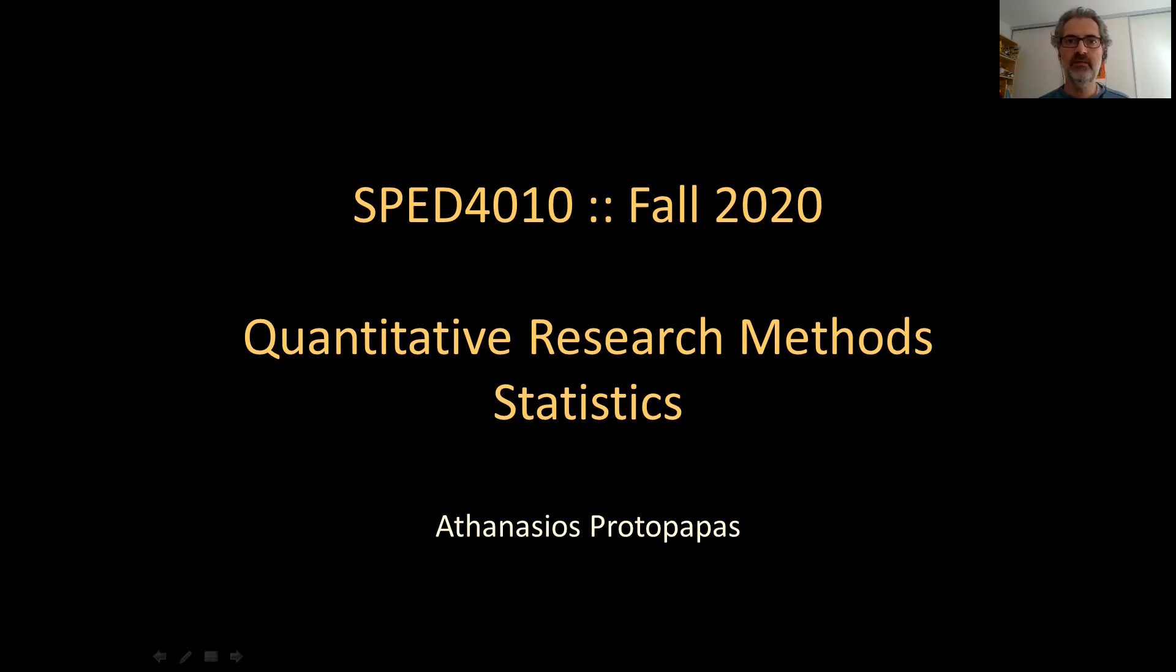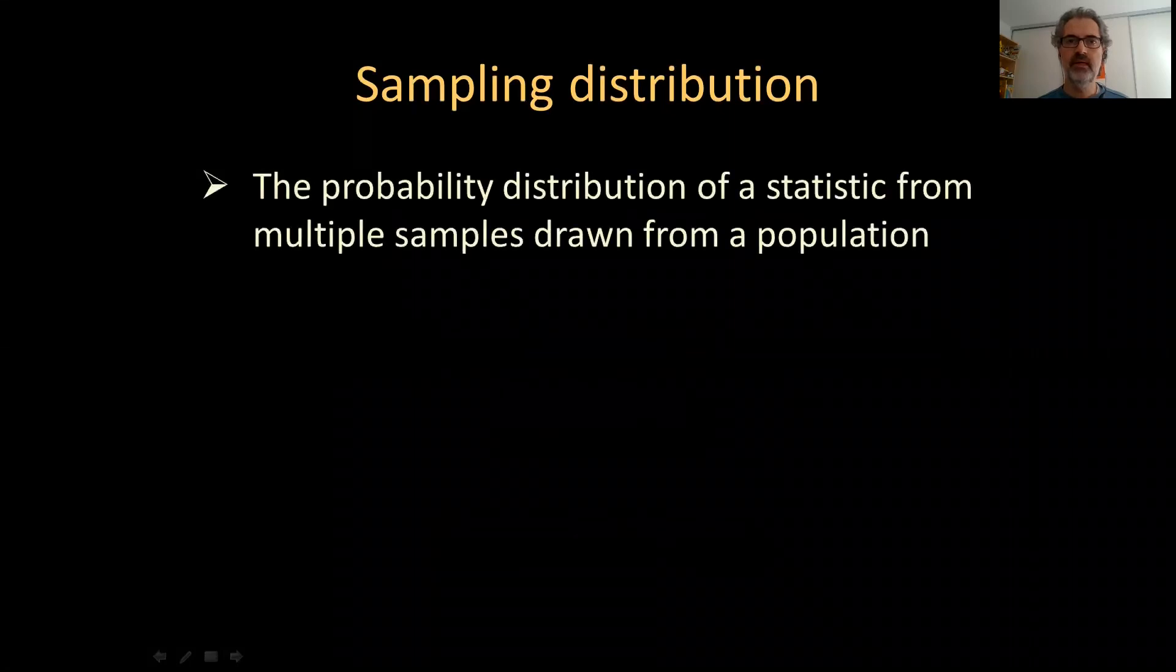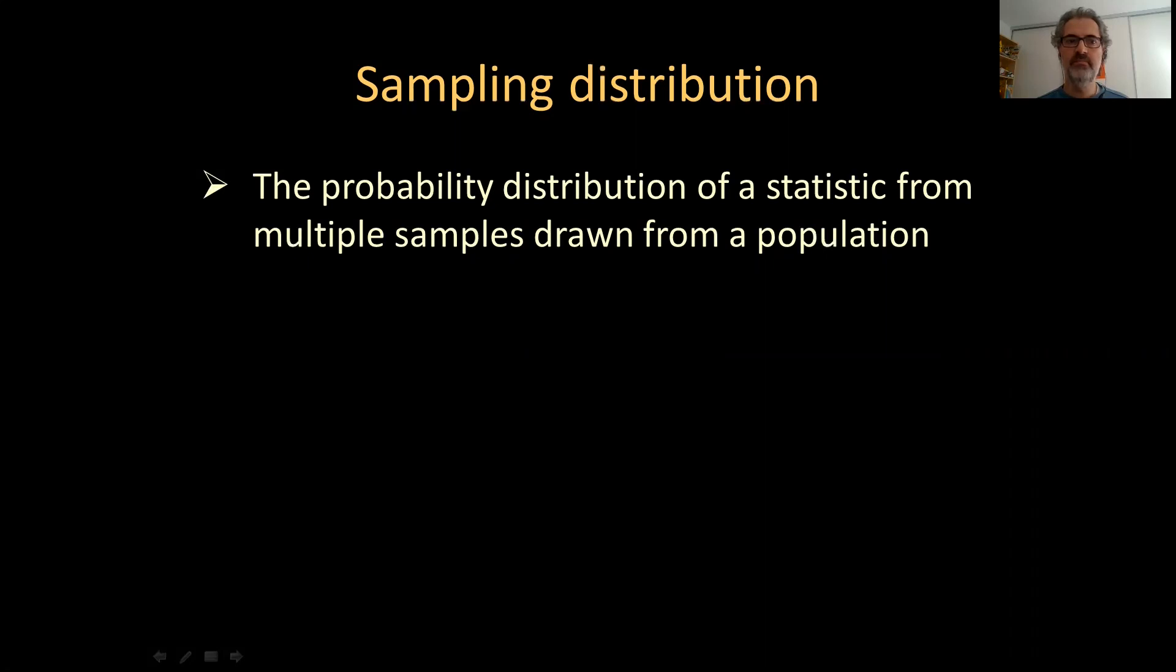In this video we will talk about sampling distributions. A sampling distribution is defined as the probability distribution of a statistic from multiple samples drawn from a population.